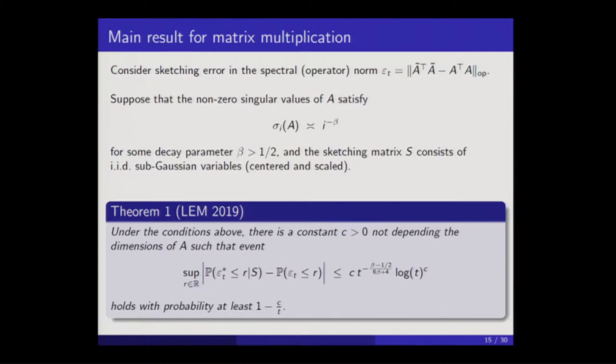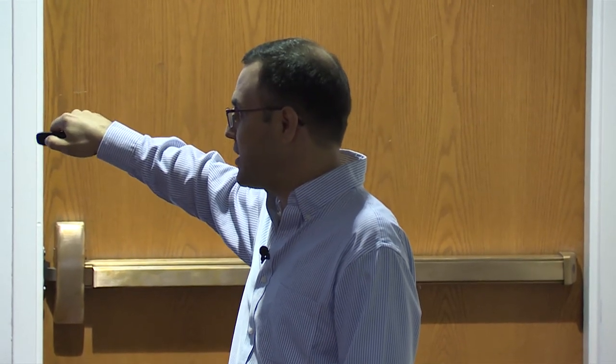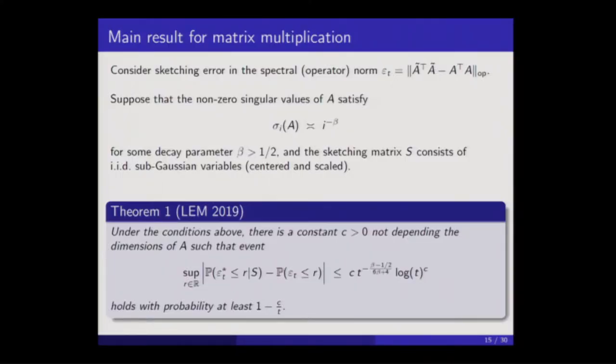A very nice property of the right side is that it's dimension-free with respect to the input matrix A — the right side is only a function of the sketch size. The reason for that dimension-free property is because of the scaling assumption on the singular values. The exponent of T is minus (beta minus 1/2) over (6*beta + 4). What this dependence shows is that as the decay gets faster, the performance of the bootstrap gets better and better, which is intuitive: if the singular values decay very quickly, the problem is becoming effectively of smaller and smaller dimension. The lower the rank, the better the bootstrap because there's more redundancy.